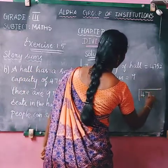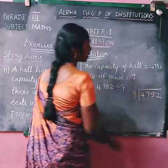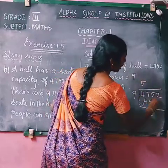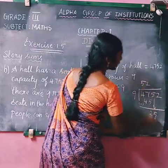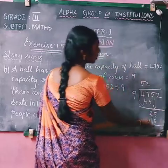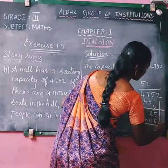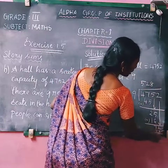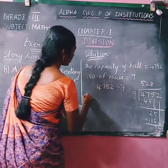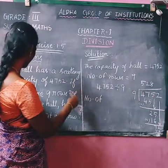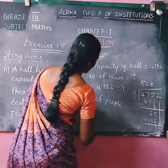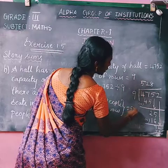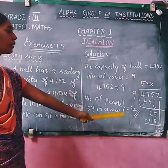Performing the division 4752 ÷ 9: first, 5 nines are 45, subtract to get remainder 2. Pull down 5 to get 25. 2 nines are 18, subtract to get 7. Pull down 2 to get 72. 8 nines are 72, remainder is 0. So 528 people can sit in each row.